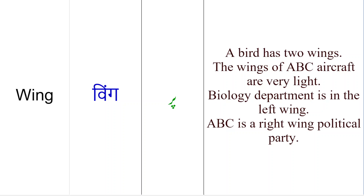Isi tarah doostho, jo theatres hote hain, stage theatres hote hain, toh aapne dekha hoga ki theatre mein kaha jata hai ke 'left wing ki tickets 50 rupees ki hain, right wing ki 70 rupees ki hain, aur center ki tickets 100 rupees ki hain' — kyunki wahan se sahi nazar aata hai. Toh yahan pe bhi left aur right ki sides ko wings kaha jata hai. Theatres mein, wrestling ke matches mein, bade bade concert halls mein bhi jab aap tickets lete hain toh likha hota hai left wing, right wing, middle, saamne ka. Toh wahan bhi aap wing ko use kertai hain.